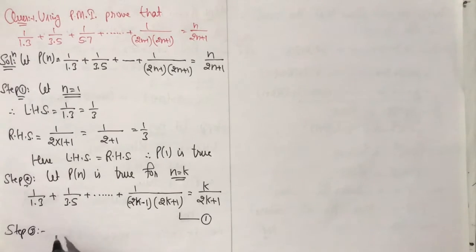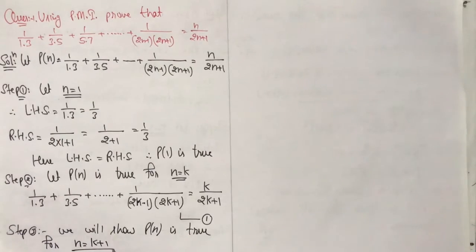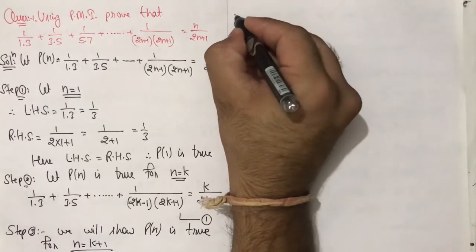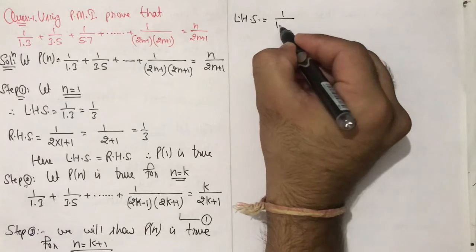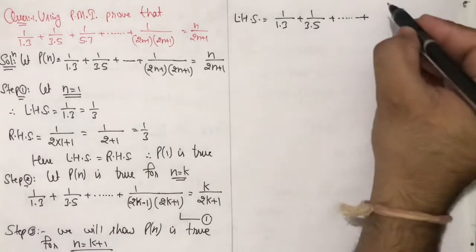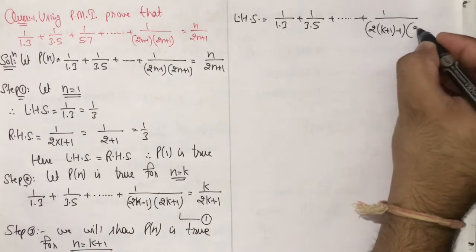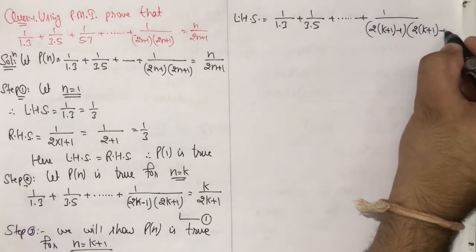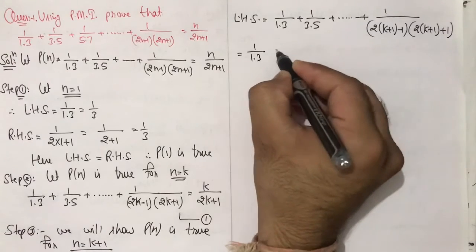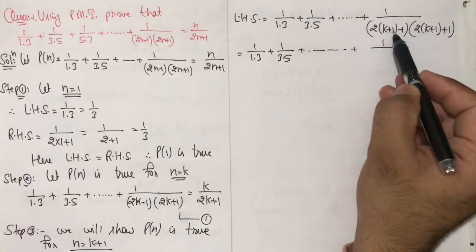Step 3: We will show that P(n) is true for n = k+1. We need to show that our statement remains true when n is replaced by k+1, using equation (1). LHS becomes: 1/(1×3) + 1/(3×5) + ... + 1/((2(k+1)−1)(2(k+1)+1)) = 1/(1×3) + ... + 1/((2k+1)(2k+3)).